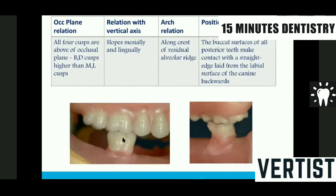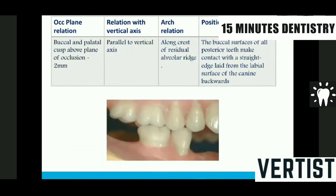The first lower tooth to be arranged has all buccal, distal, mesial, and lingual cusps higher than the occlusal plane. Its relation to the vertical axis: it should slope mesially and distally — opposite to the upper molar which slopes distally and buccally — to achieve proper contact. It is placed along the crest of the alveolar ridge. Mandibular second premolar: buccal and palatal cusps are about 2 mm above the occlusal plane, parallel to the vertical axis. The mesial cusp of the lower molar contacts the embrasure between the upper molar and premolar, and the lower second premolar contacts the embrasure between the upper second premolar and first premolar.